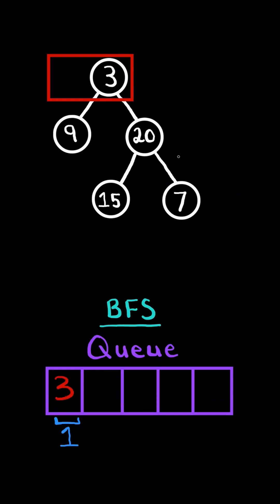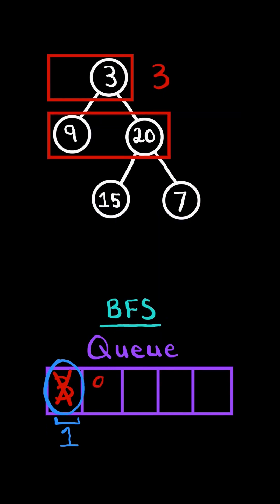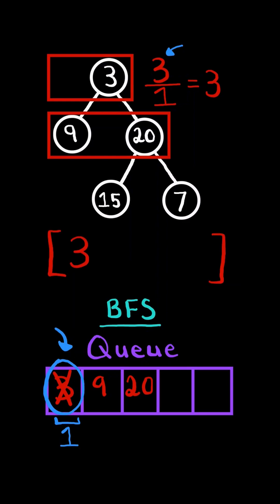We have one element in our queue, so we will iterate one time in our queue. We pop from the queue and add the node's value to the sum. When we pop an element, we also add its children to the queue. Now we are done iterating one time in our queue, which means we have finished calculating the total sum at this level. So we divide the sum by the number of iterations we did — this gives us the average in the level — and we append the average to the resulting list. Then we continue to the next level.